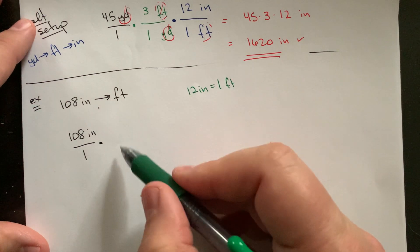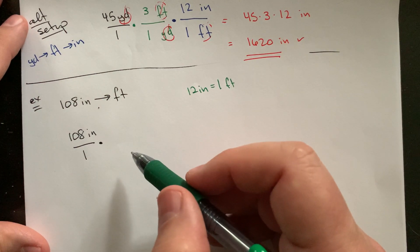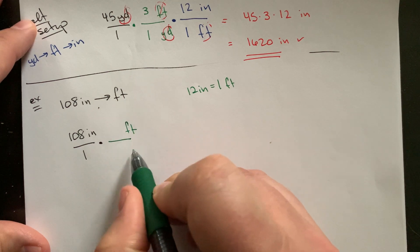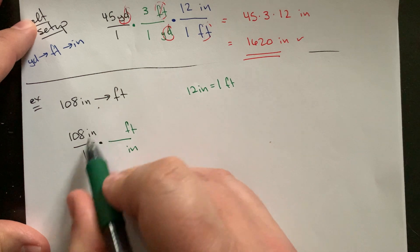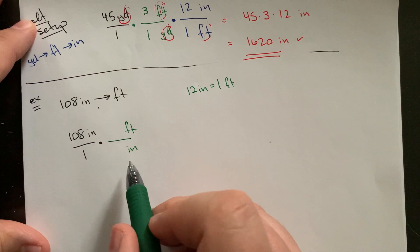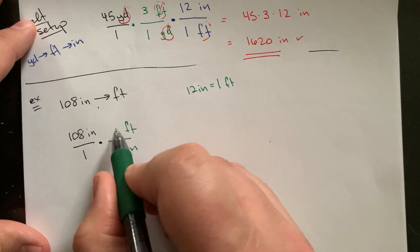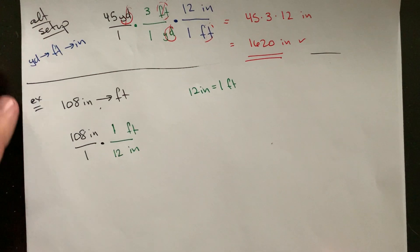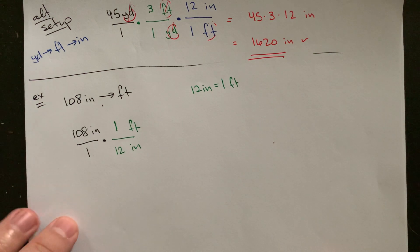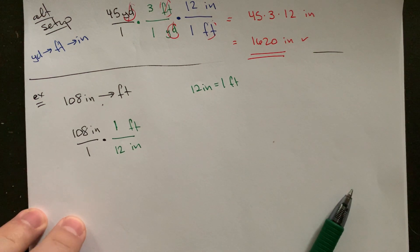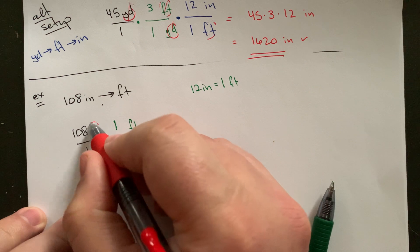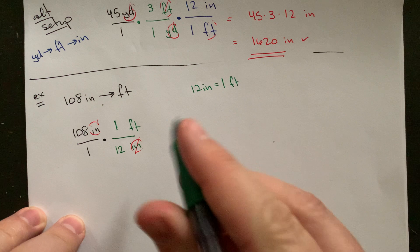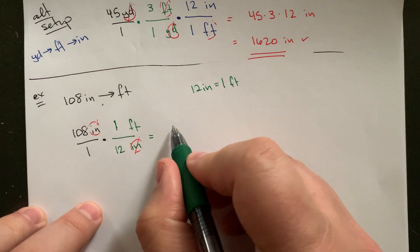And so what will happen now, we're going to start this the same way we did all the others. So 108 inches over one times. And so now I need to flip the fraction that I'm multiplying by. So I'm trying to get feet on top and then inches. I need to cancel out. So I need to match this inches here with inches on the bottom. And my rate is going to be one foot for every 12 inches. And so what happens now is rather than being a multiplication problem, this one really turns into a division problem.